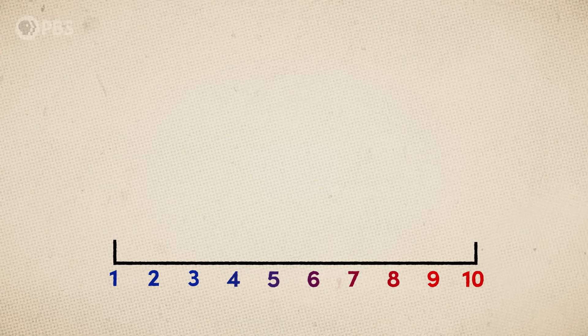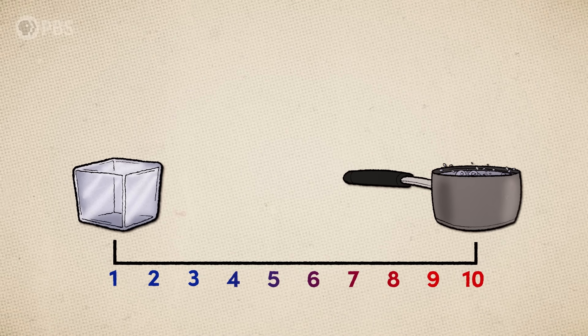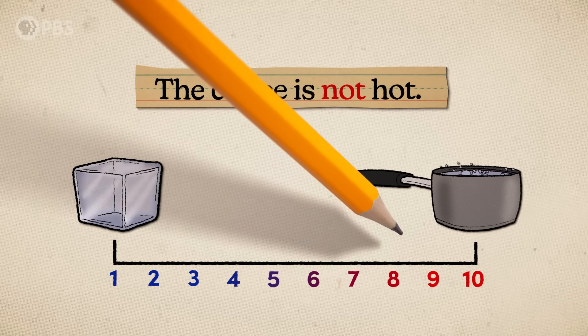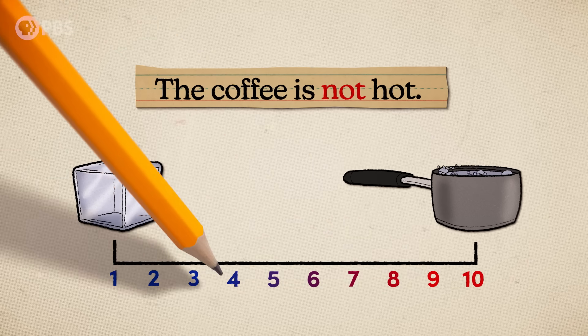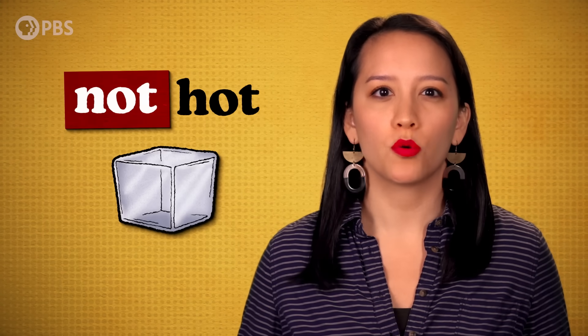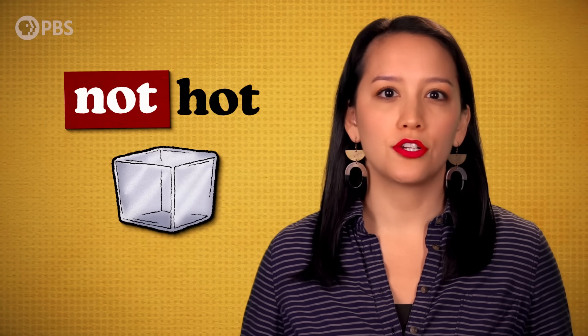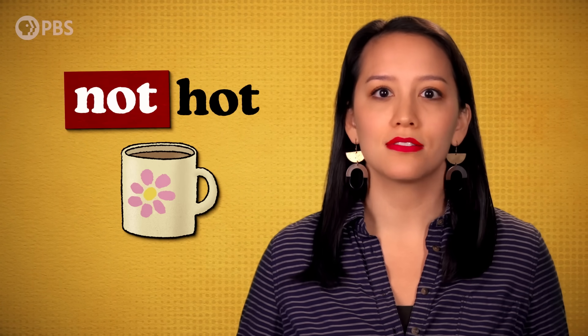Sometimes we use negation to express ideas that are a little fuzzier. In one study, researchers asked participants to rate negated phrases on a scale of 1 to 10. So if 1 means frigid and 10 means boiling, where would they place phrases like "the coffee is not hot"? They found subjects interpreted phrases like not hot or not good to simply mean less hot or less good. This suggests that negation words like no, not, and none aren't simply on-off switches. Instead, our brains use context to determine whether negation inverts the meaning or simply adjusts its intensity.